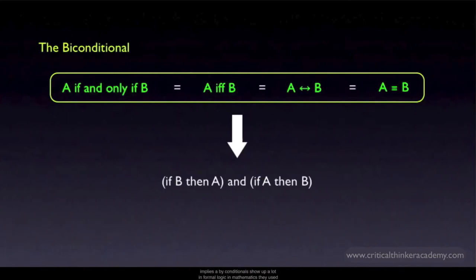Biconditionals show up a lot in formal logic and mathematics. They are used to demonstrate the logical equivalence of two different expressions. From a propositional logic standpoint, the defining feature of a biconditional is that the claims A and B always have the same truth value. If A is true, then B is true, and vice versa.